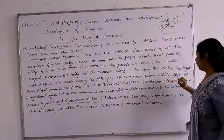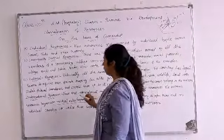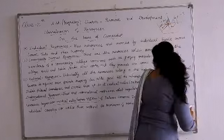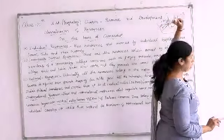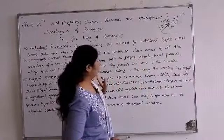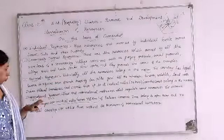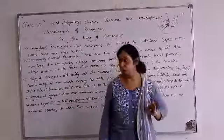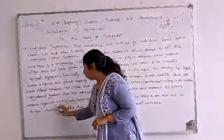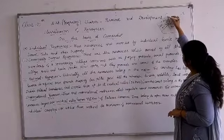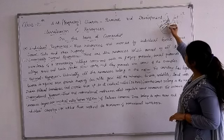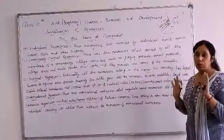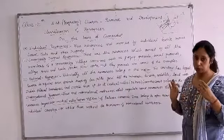The country has legal powers to acquire even private property for public good. All minerals, forests, wildlife, and land within India's political boundary, and oceanic area up to 12 nautical miles — approximately 22 km — belong to the nation as national resources. Next, international resources: the oceanic area beyond 200 nautical miles — approximately 375 km — can only be used with permission from international institutions like the UN, because these are international resources.